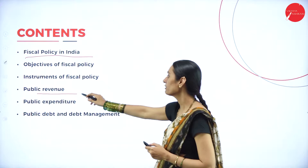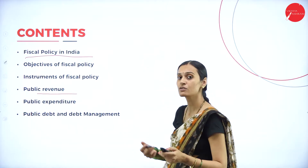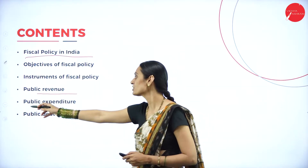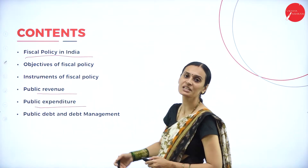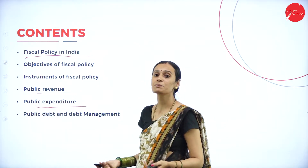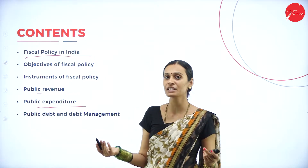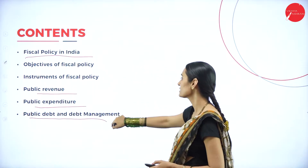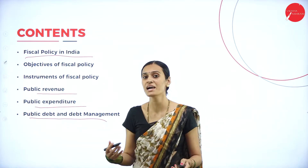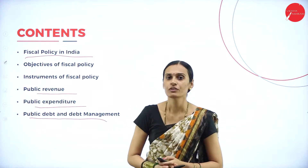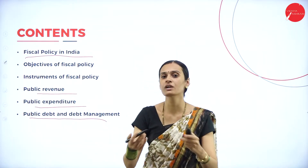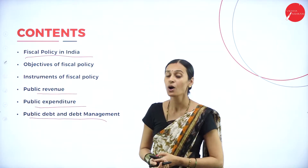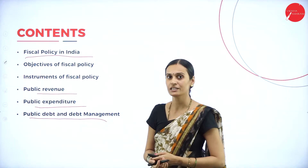These are all the different instruments of fiscal policy. Under public revenues there are different types: tax revenues and non-tax revenues. Public expenditure has two types: planned expenditure and non-plan expenditure. Another important instrument is public debt and the management of public debt. These are all the important contents which belong to fiscal policy in India.